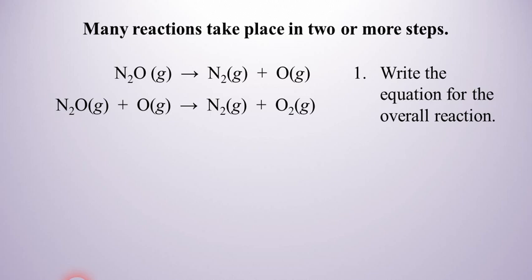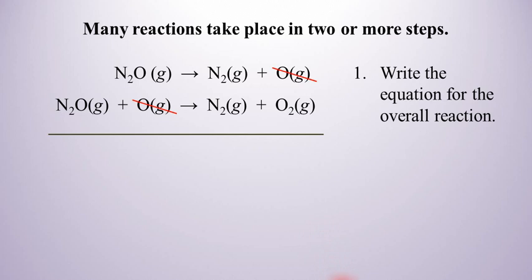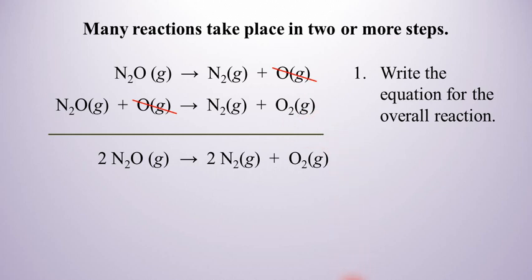This is not too difficult. All we have to do is take these two steps and add them together. When we do that, we notice that there is an oxygen atom that's produced in the first step and then it's used up in the second step. We can actually cancel these out just like we'd cancel things out in algebra. So now we add these together and we notice that there are two N2O's on the left side, two N2's on the right side, and an O2. And so that's the overall chemical reaction.